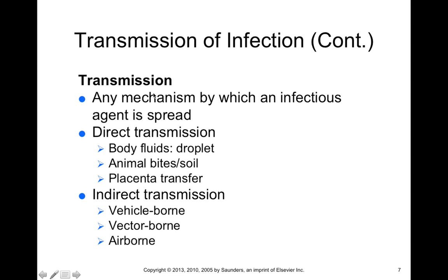Transmission is the word we use to describe any mechanism by which an infectious agent is spread. There are both direct and indirect transmissions. Direct transmission would be exposure to body fluids like droplets, animal bites, exposure to soil that carries a microorganism, or even through placental transfer. Pregnant mothers can sometimes transfer infectious microorganisms from their blood through the placenta into the fetus's bloodstream — for example, a mother with HIV can spread the virus to her unborn fetus.